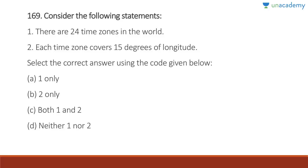Question 169: There are 24 time zones in the world — wrong; there are more than 24 time zones determined by country borders that deviate from the meridian. Each time zone covers 15 degrees of longitude — also wrong; countries like China have only one time zone covering more than 50 degrees.